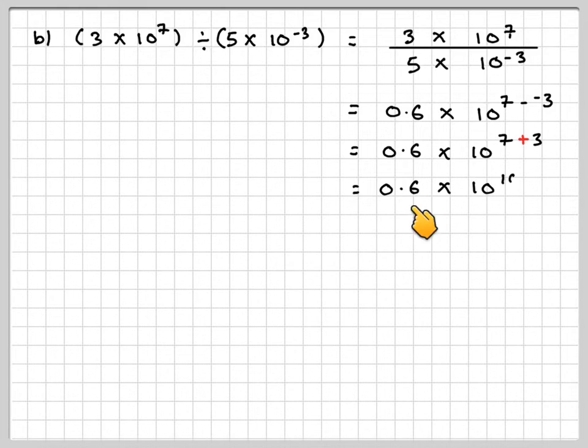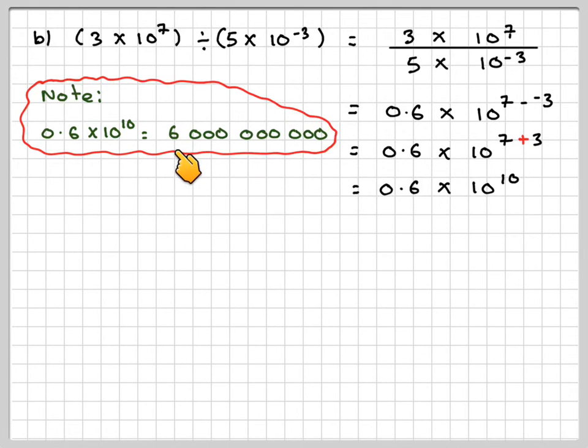Now this number is actually not in standard form, because the condition is that this number must be between 1 inclusive and 10 not inclusive, and 0.6 is less than 1. If you think what this number means, 0.6 times 10 to the 10 is going to be 6 billion. We move the decimal point 10 places.